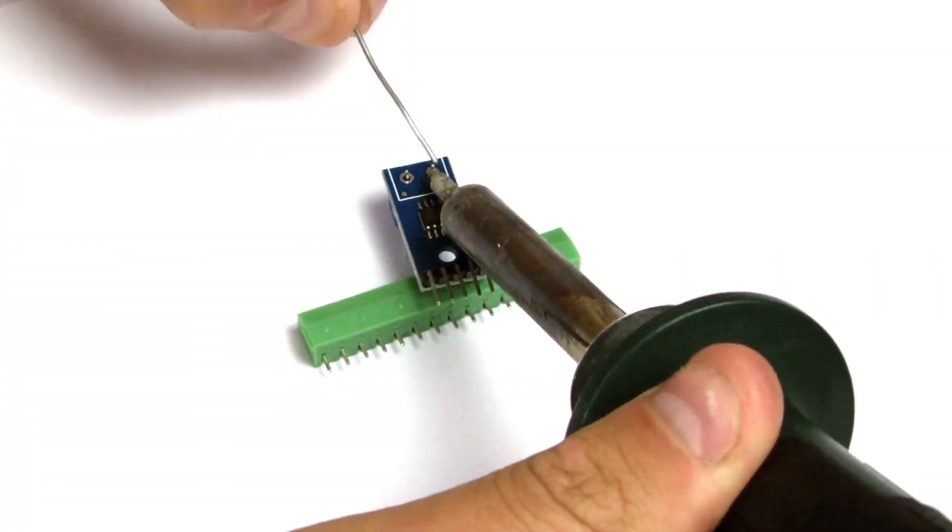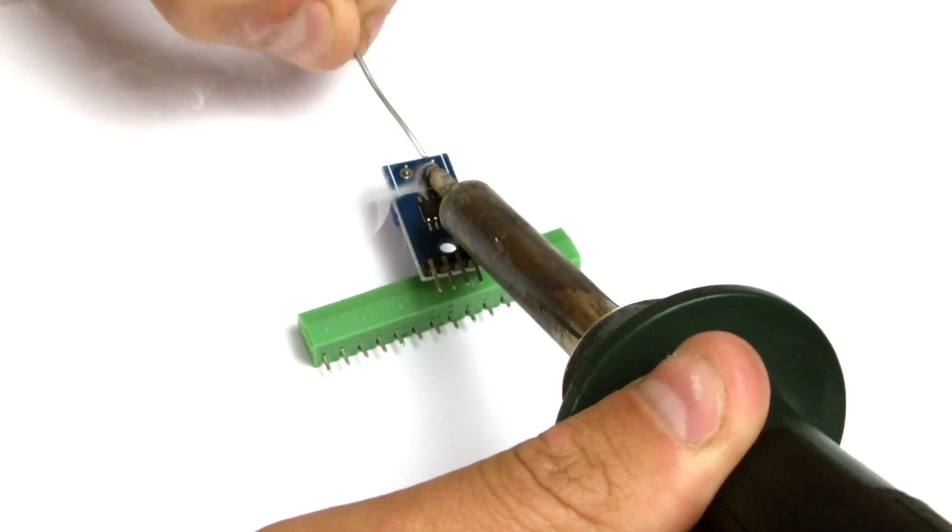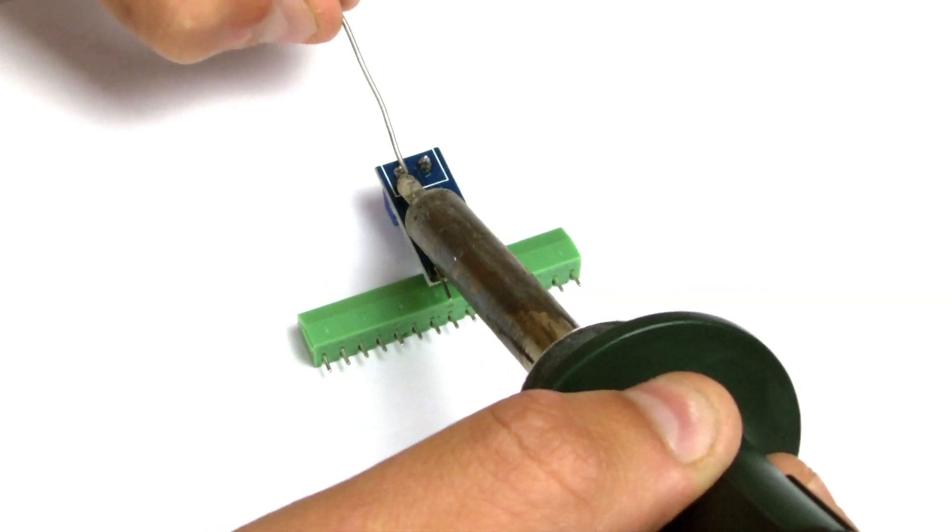As I solder on the terminal block I'll run through what the breakout board includes. There's a 3.3V regulator, 10uF bypass capacitors, level shifting circuitry, the two pin terminal block and the pin headers.